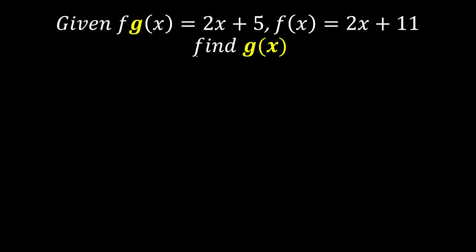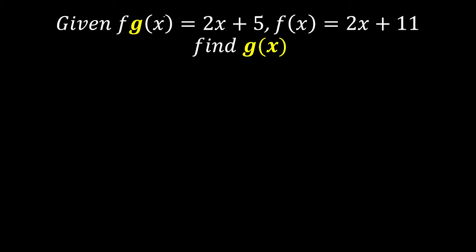The question: fg(x) is 2x plus 5, f(x) is 2x plus 11, find g(x). The first step of BSC is B — verify first whether we are finding the back function. Yes, g(x) is located at the back, so we can proceed to step two.